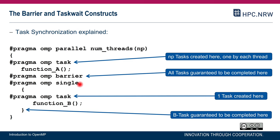Next, there is a single construct — referred to as the inspector pattern — where one thread executes the body of the single and may execute or defer a task. Because there is only one thread in the single, only one task will be created and function B will be executed exactly once. The completion of this task and the execution of function B is guaranteed after the end of the single construct, because single is a work-sharing construct and contains a barrier at its end.